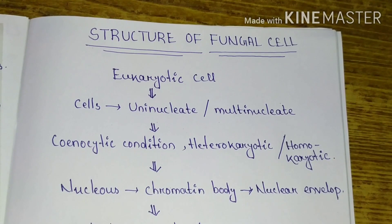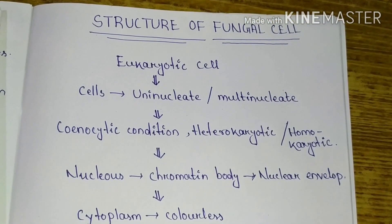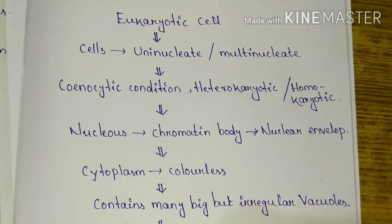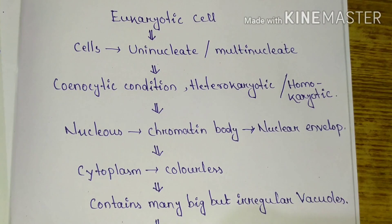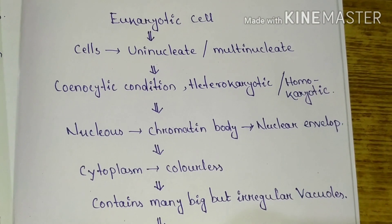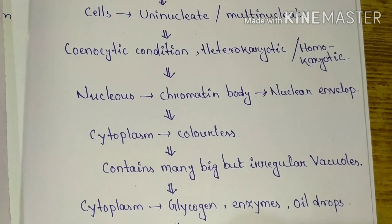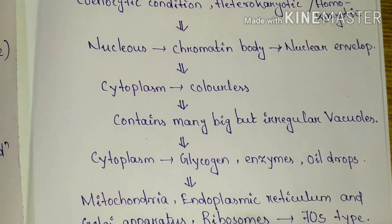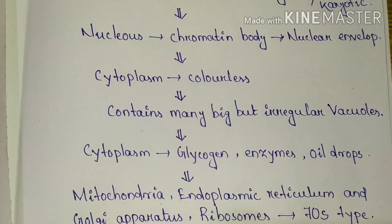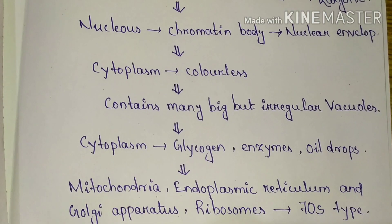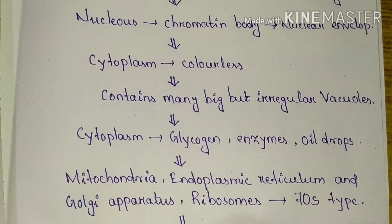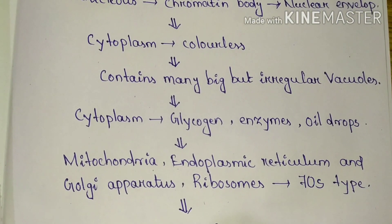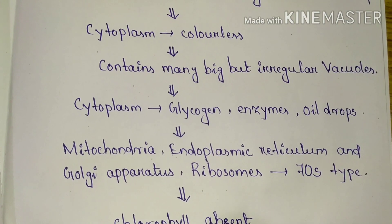To summarize: fungi are eukaryotic cells; the cell may be uninucleate, binucleate, or multinucleate. The nucleus, which contains the chromatin body, is surrounded by a nuclear envelope. The cytoplasm is colorless and contains many irregular vacuoles. In higher fungi, a centrally placed large vacuole is found, and the cytoplasm contains glycogen, enzymes, and oil droplets — the reserve food materials.